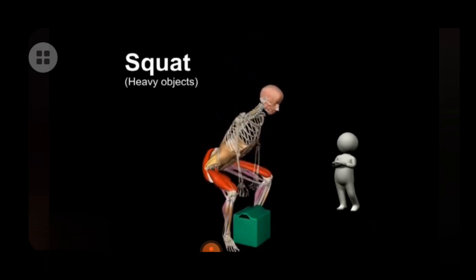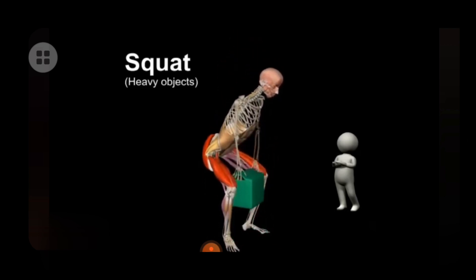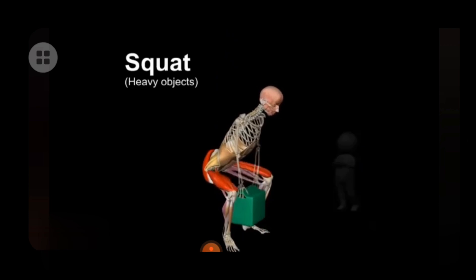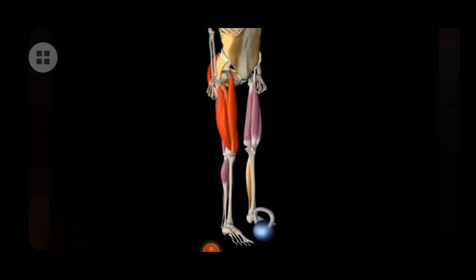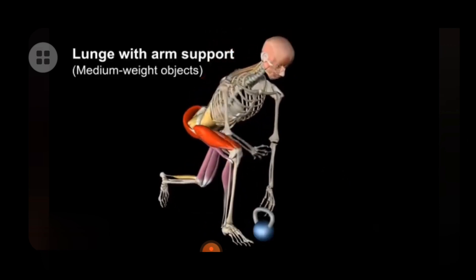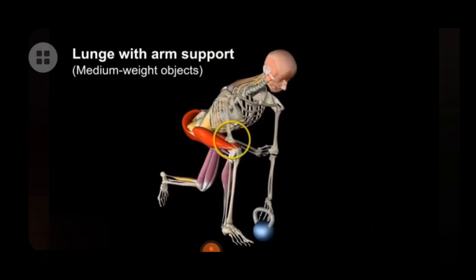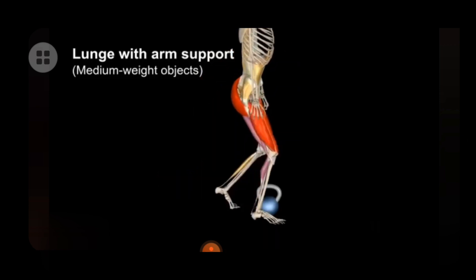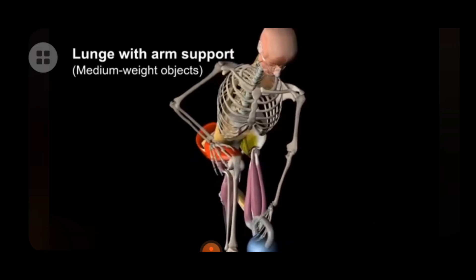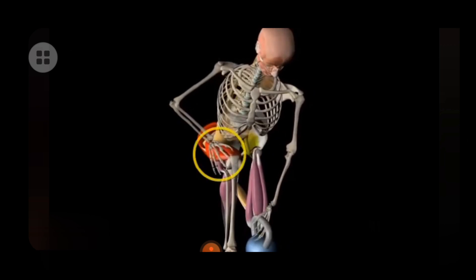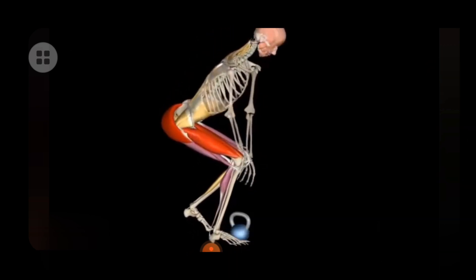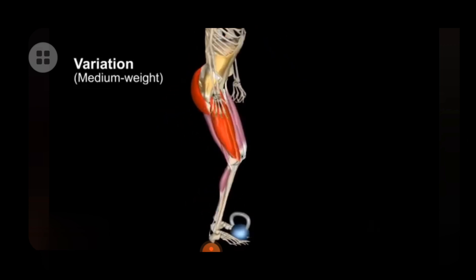The erector spinae muscles stabilize the spine. Another option is lunge with arm support. Resting the arm on the thigh directs the forces to the ground. Bend the knees and keep the back straight. This variation is like the squat, but with legs closer together.